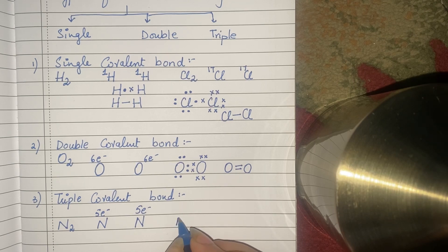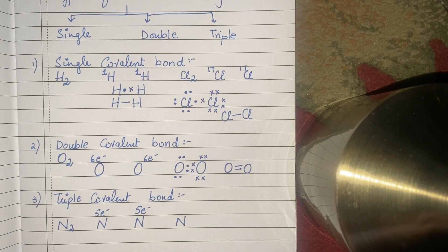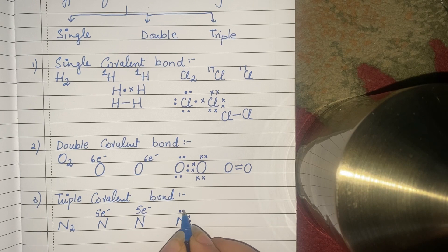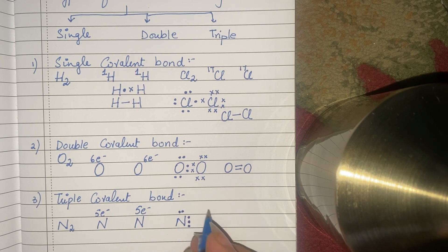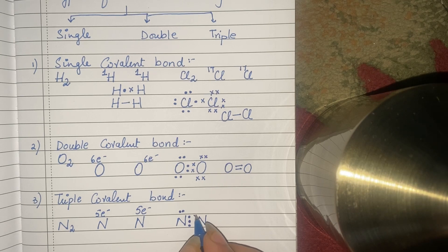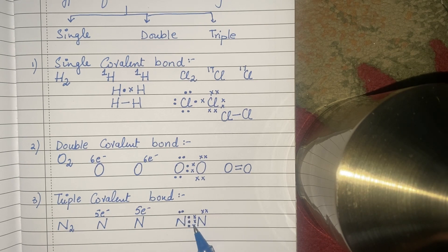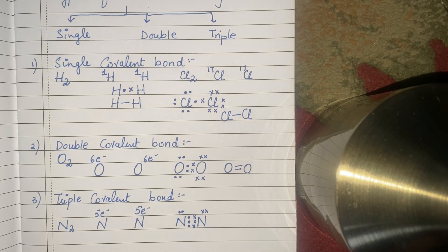एक nitrogen के electrons मैं dot से show करूँगी, दूसरे के मैं cross से show करूँगी. पहली nitrogen के five electrons — तीन share करने थे तो मैंने तीन दर्मियान में लिखे हैं. दूसरी nitrogen के भी five electrons, और shared electrons दर्मियान में हैं. अब count करें — इस nitrogen के पास eight electrons हैं, इसी तरह दूसरे nitrogen के पास भी eight electrons हैं. तो दोनों nitrogen stable हो गई हैं, और N2 का structure बन गया.